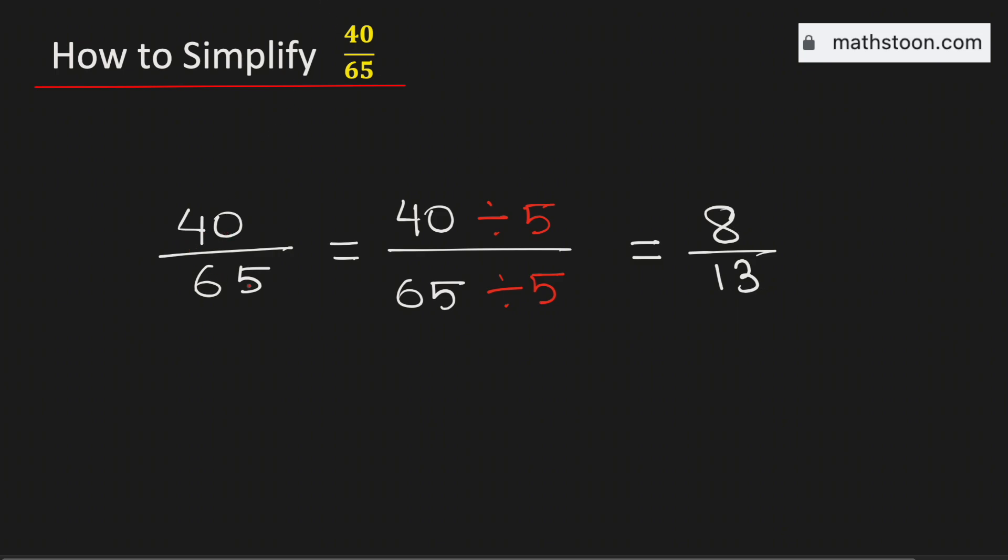Therefore, 40 over 65 simplified is equal to 8 over 13, and this is our final answer.